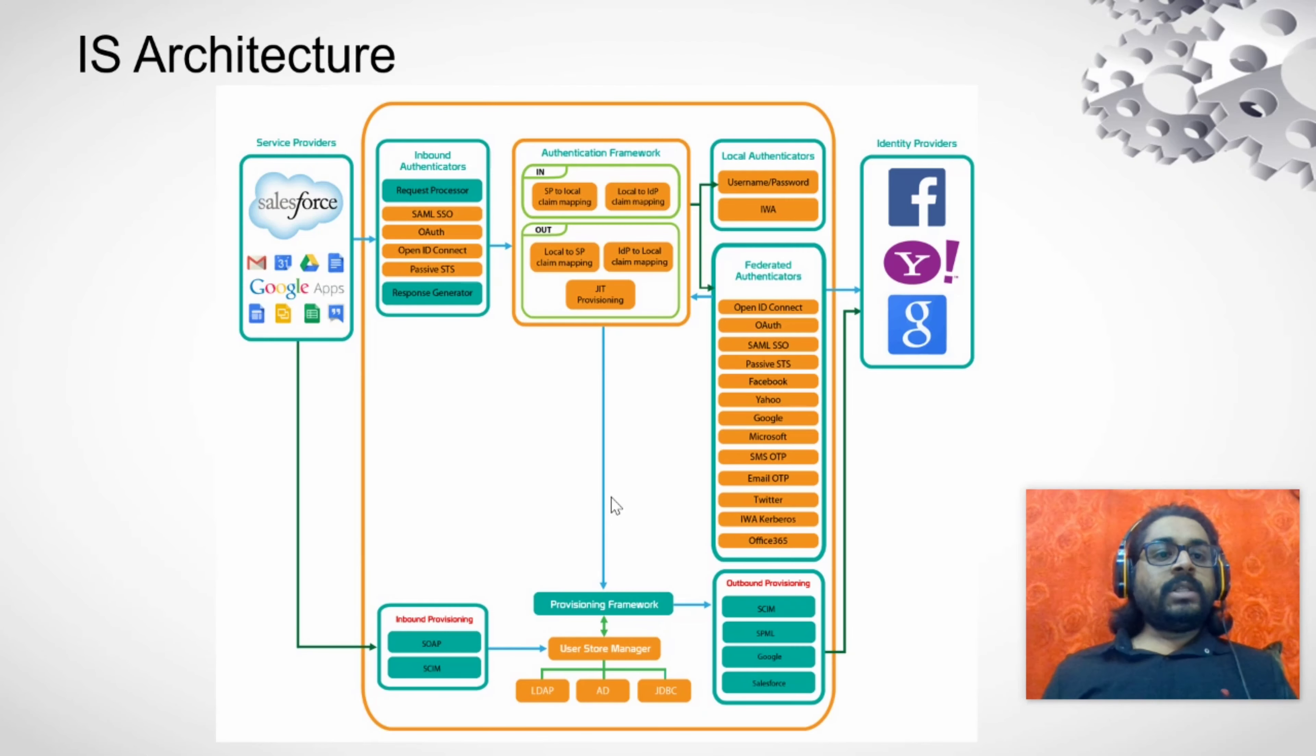This is the actual architecture of identity server. I know it might be a little overwhelming, but let us take this one part at a time and discuss in detail. So the identity server has the following components: service provider, identity provider, inbound authenticator, local authenticator, federated authenticator, authentication framework, and provisioning framework.